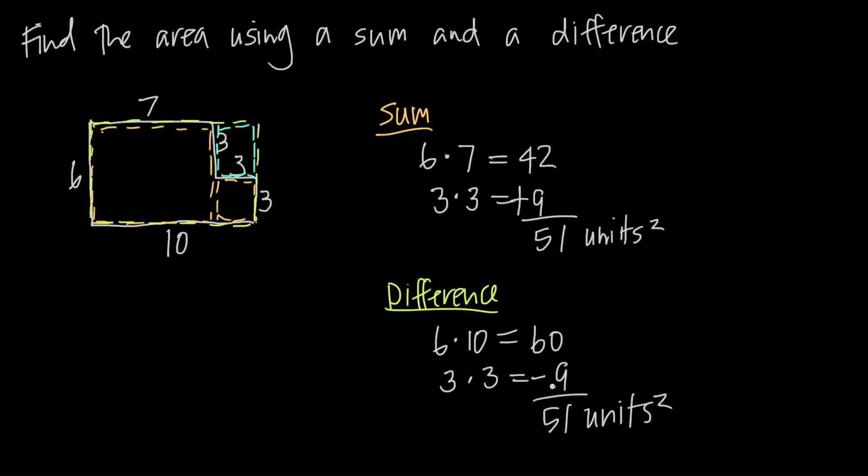So those are just two different ways to find the area of this rectangular shape. You can either separate the area into as many areas as you need to and then add them all together. Or you can find the area of the largest shape and then subtract out the area of any pieces that are missing. Either way, you can use a sum or a difference to find the area of a rectangular shape like this one.